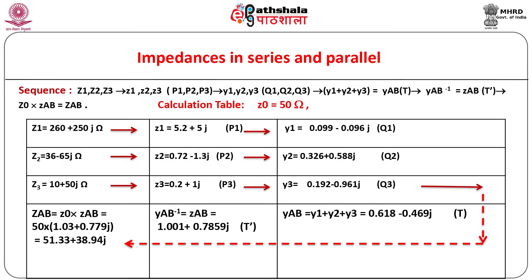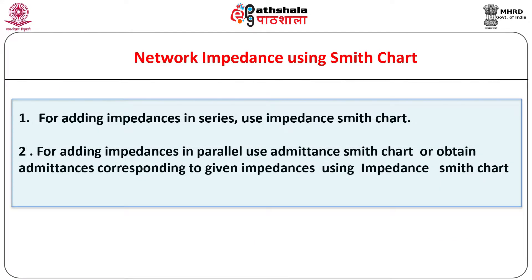Note that there can be a little error in the value obtained from the Smith chart; however, it is within a tolerable limit. Smith chart can be used to find the impedance of a network in an easy manner, avoiding laborious calculations involving complex algebra. Two principles are followed: for adding impedances in series, use the impedance Z Smith chart; for adding impedances in parallel, use the admittance Y Smith chart, or obtain admittances corresponding to given impedances using the impedance Smith chart.